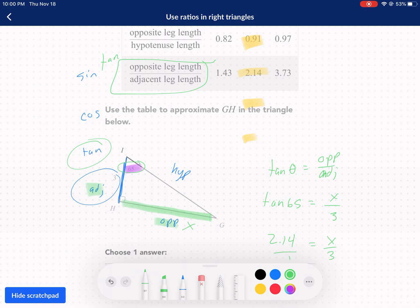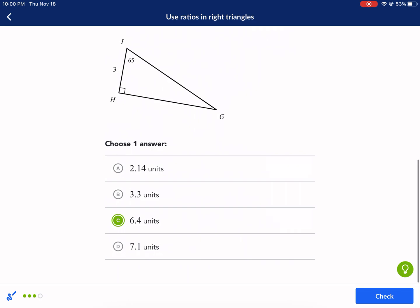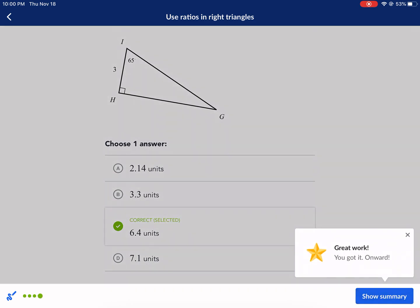Put it over one, then I cross multiply. So I have 2.14 times 3 on one side, and then I have X times one, which is just X. So I just do 2.14 times 3 and I get 6.42. So now I have my side length, 6.42, and I'm going to round down to 6.4, and we're done.